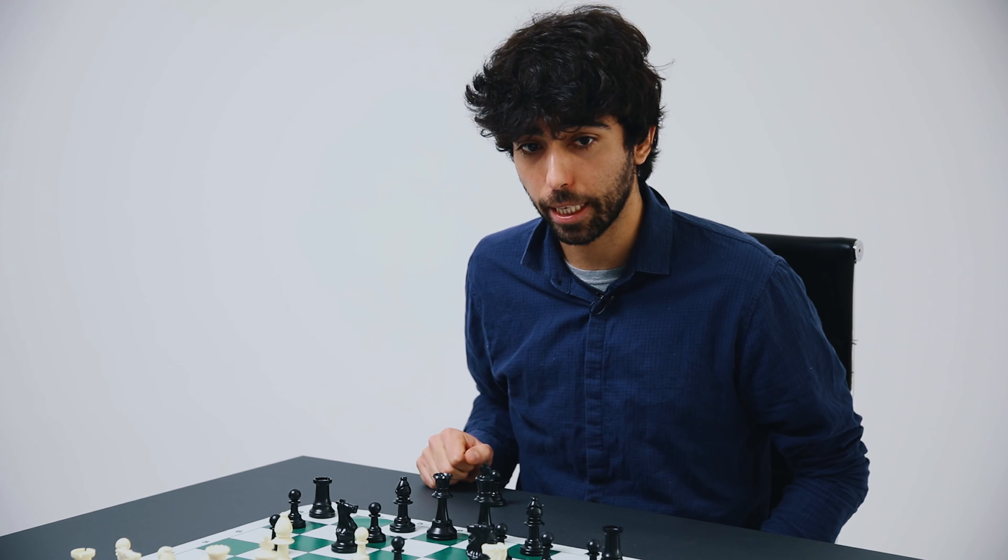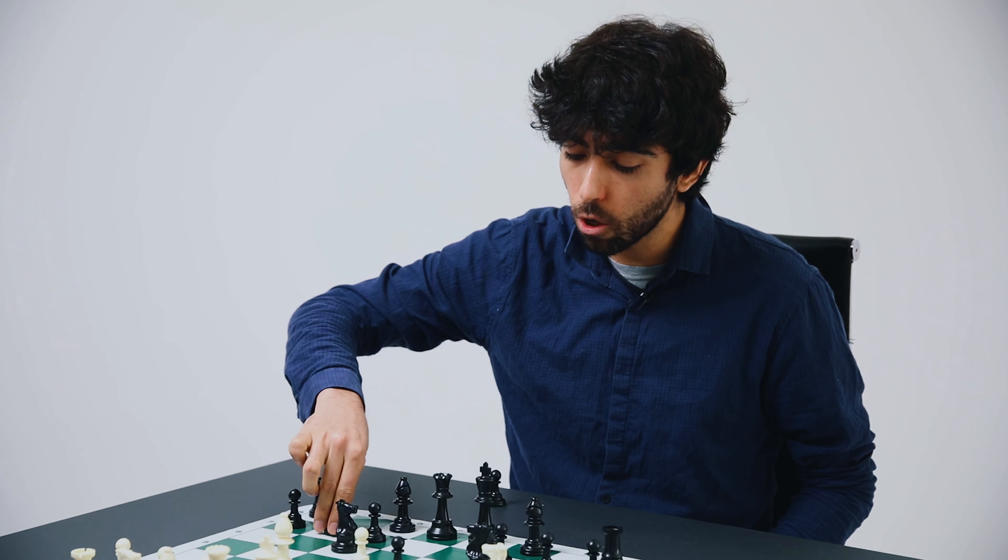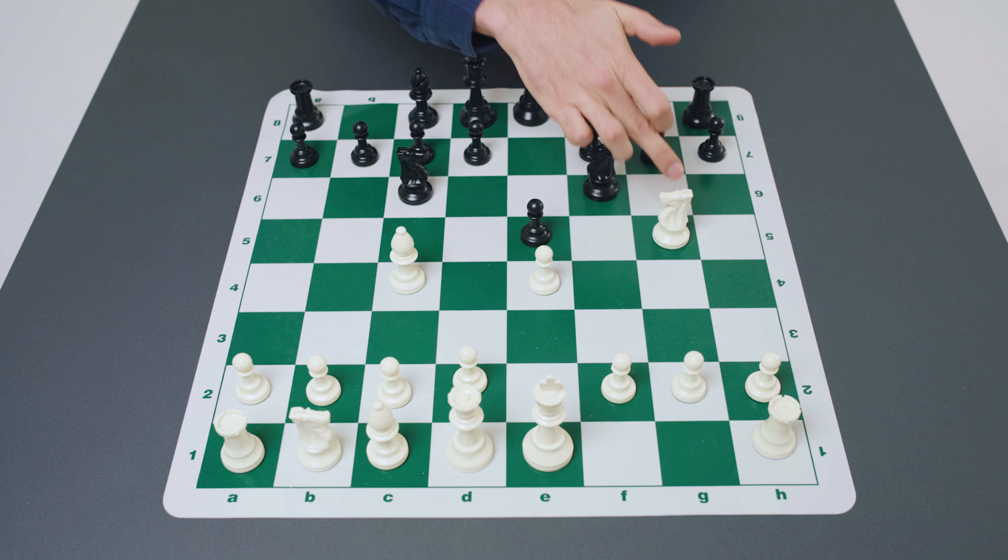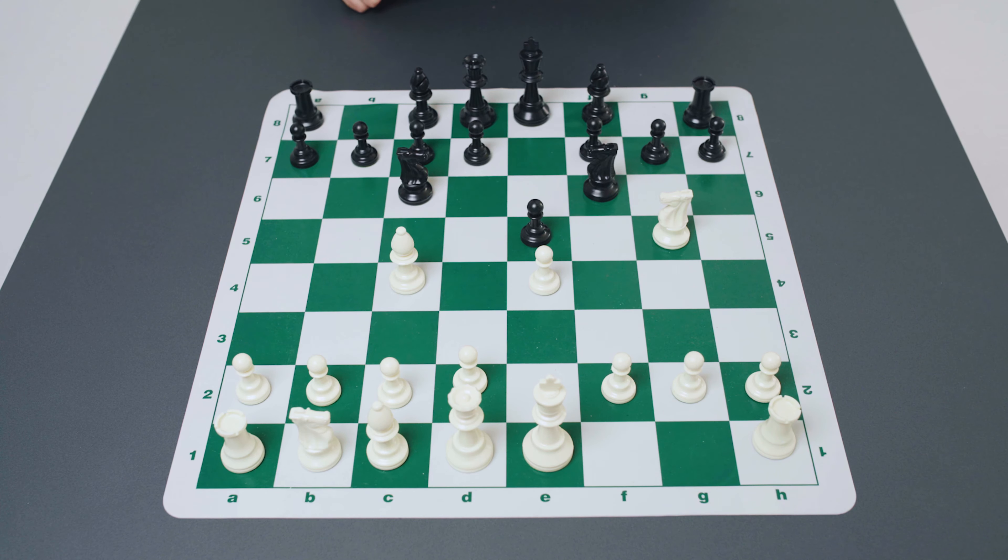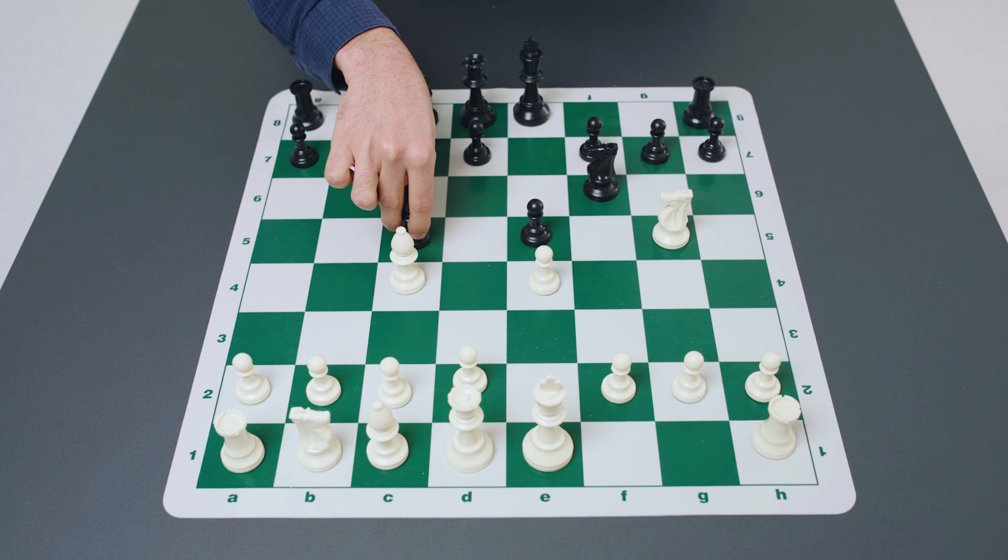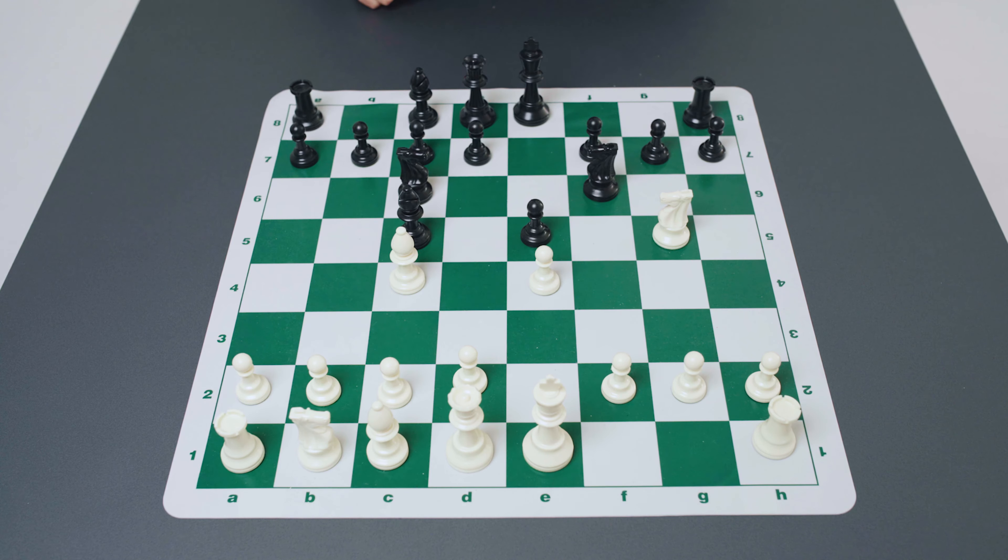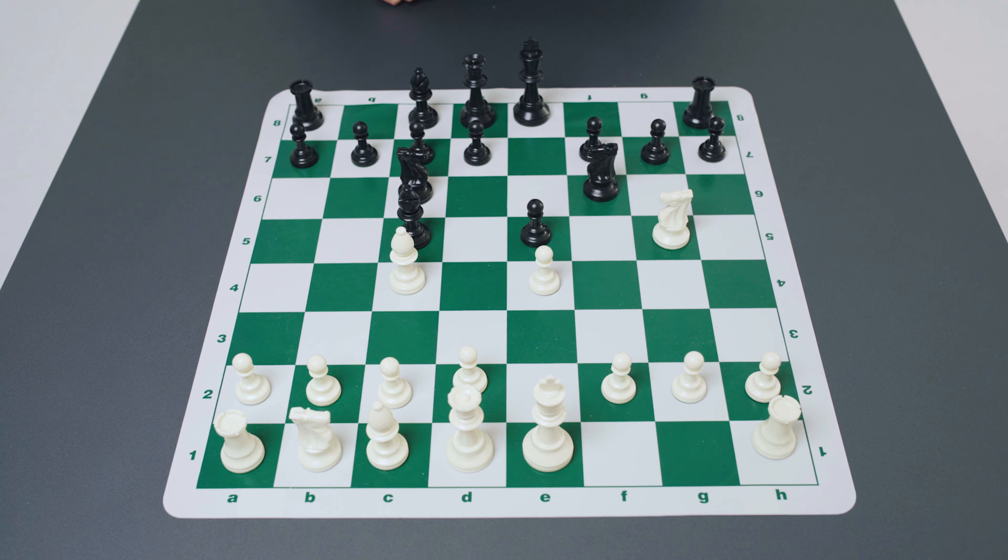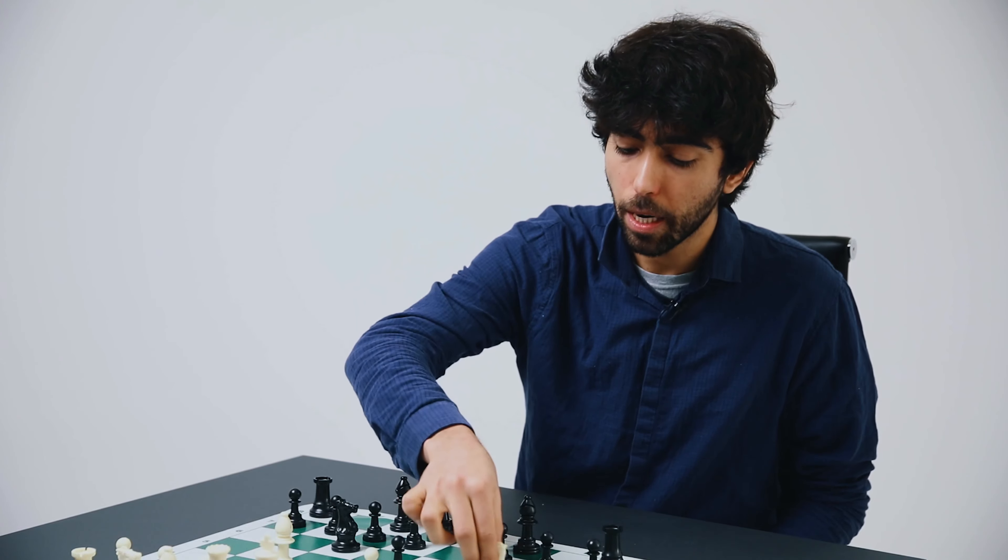After knight takes d5, the very natural recapture of the pawn, there are tactical problems and white here can continue with knight takes f7 which is known as the fegatello attack or the fried liver attack. We will take a look at this and explain why it is that white can get away and indeed profit from a piece sacrifice like this so early on in the game.